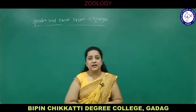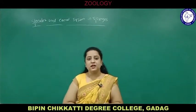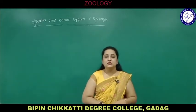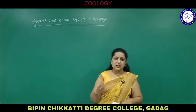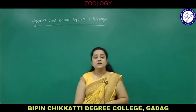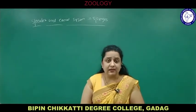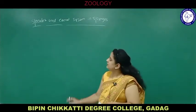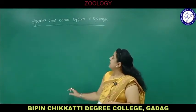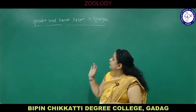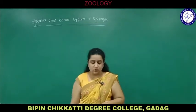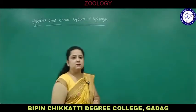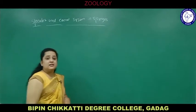They are exclusively marine, found only in marine water, except Spongilla which is a freshwater sponge. They exhibit asymmetry or superficially radial symmetry. Now we will see the spicules and canal system in sponges. What are spicules? Spicules are the endoskeleton.